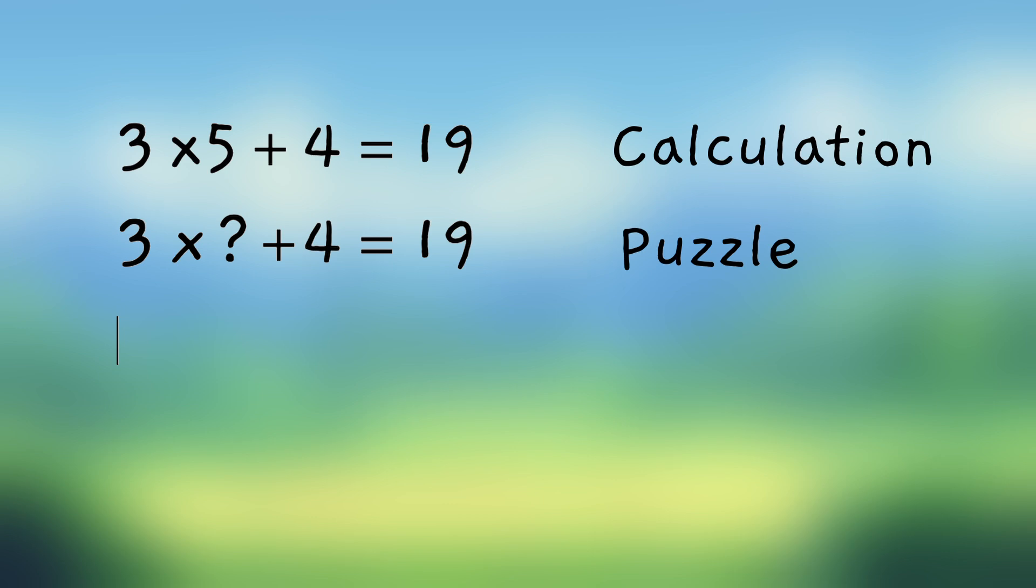But what if you asked this to someone? You went up to someone on the street and said, 3 times what number plus 4 equals 19? They wouldn't know off the top of their head. They'd have to think about it a little bit. And that's one of the things you'll learn how to do in algebra.